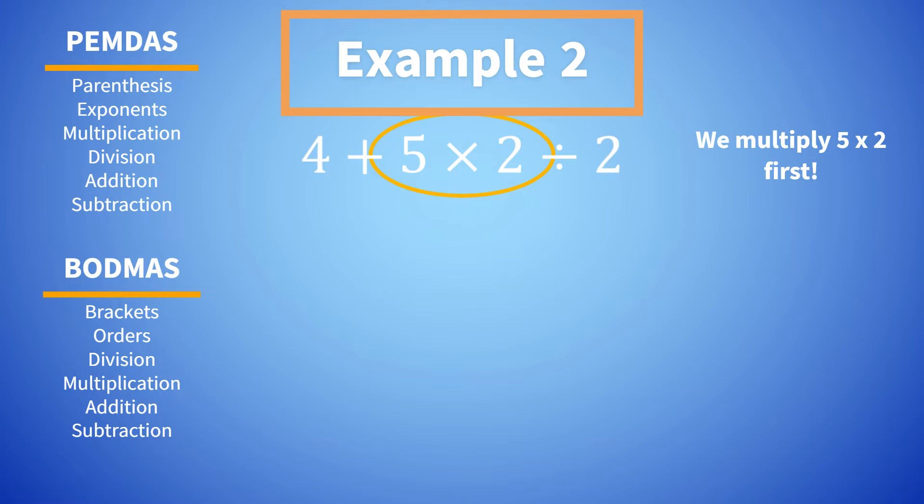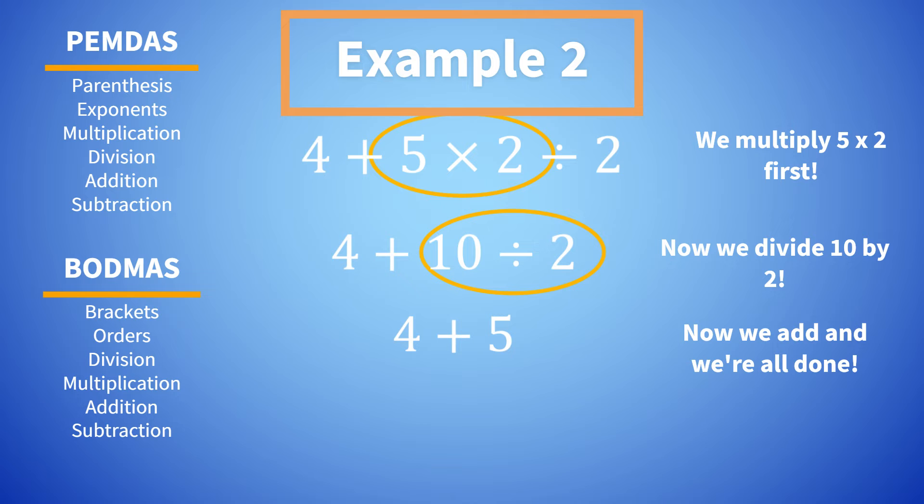What we have now is four plus ten divided by two. Now we just have addition and division. Since division is higher in the order of operations, we divide ten by two. Now we add and we're all done. Our final answer is nine.